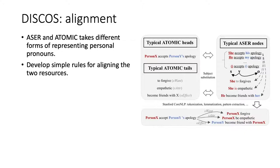As Acer and Atomic adopt different ways of representing personal pronouns — in Acer, the nodes use concrete personal pronouns like 'he' and 'she,' while in Atomic, the subjects are placeholders like person X and person Y — we need to convert, for example, 'person X accepts person Y's apology' to something like 'she accepts his apology' to be compatible with the format of Acer. In the end, we get a unified graph where both Atomic and Acer are in the same format.